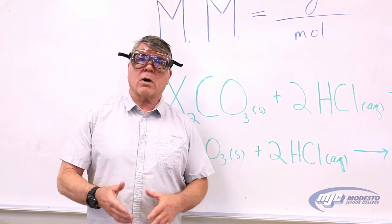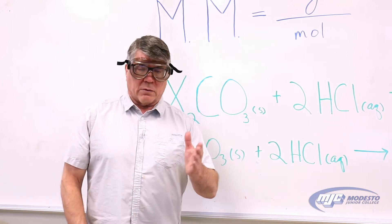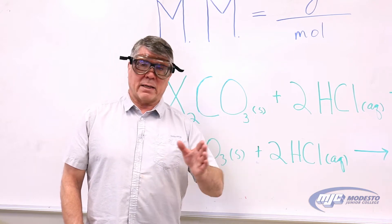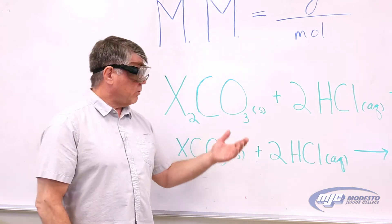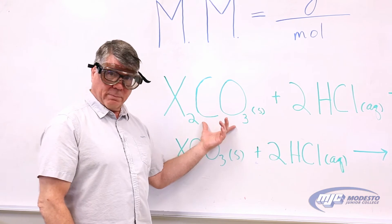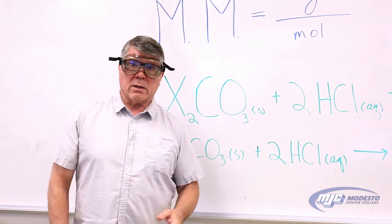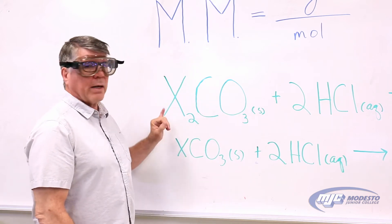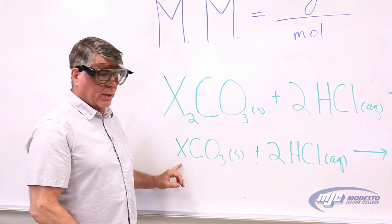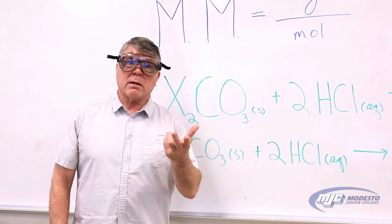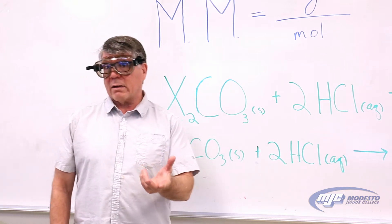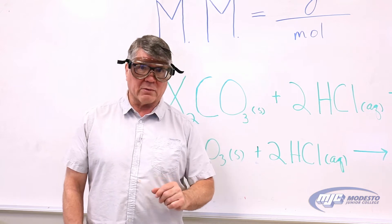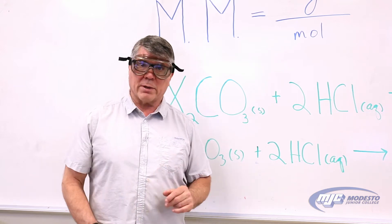So first of all, unknown carbonate — what does that mean? It means that it's an ionic compound and the anion is carbonate, CO₃²⁻. What's unknown about it is the identity of the cation; X just stands for whatever it could be. And because we don't know what the cation is, we don't know what the molar mass is. That's what we're going to find out — the molar mass of your unknown carbonate.